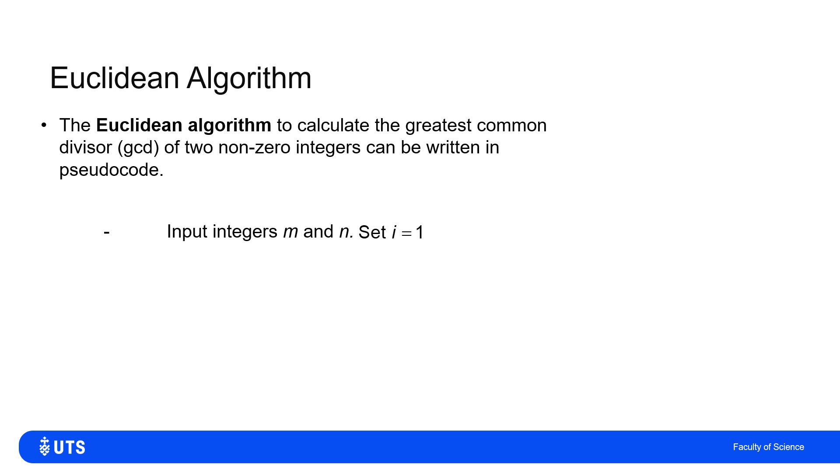So in pseudocode, I have to input the two integers M and N, and I'll set an index i = 1 initially.